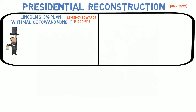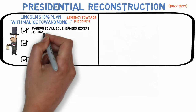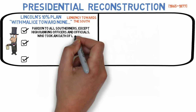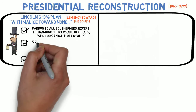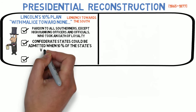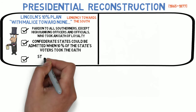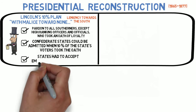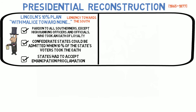Proposed as early as 1863, Lincoln offered a full pardon to all Southerners except high-ranking officers and officials who took an oath of loyalty to the United States. Former Confederate states could be admitted back into the Union when 10% of the states' voters in the 1860 election took the same oath. The former Confederate states also had to accept the Emancipation Proclamation. Lincoln faced opposition to his plan from his own political party — a group of Republicans known as Radical Republicans proposed a much different plan, which will be discussed in the next lecture.